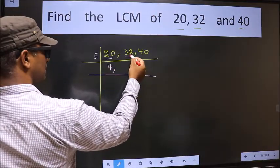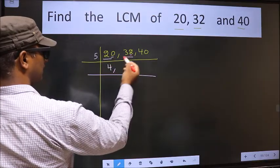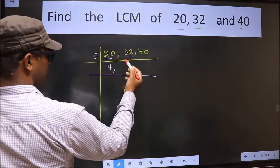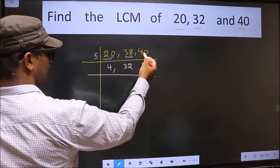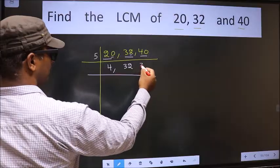The other number 32, last digit is neither 0 nor 5, so this number not divisible by 5. So, we take 32 as it is. The other number 40. When do we get 40 in 5 table? 5, 8 is 40.